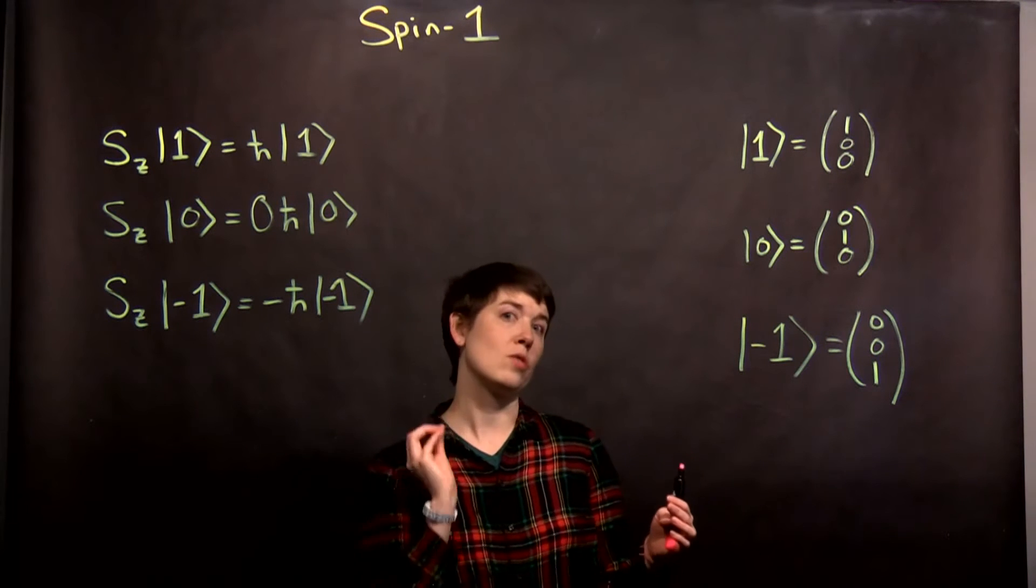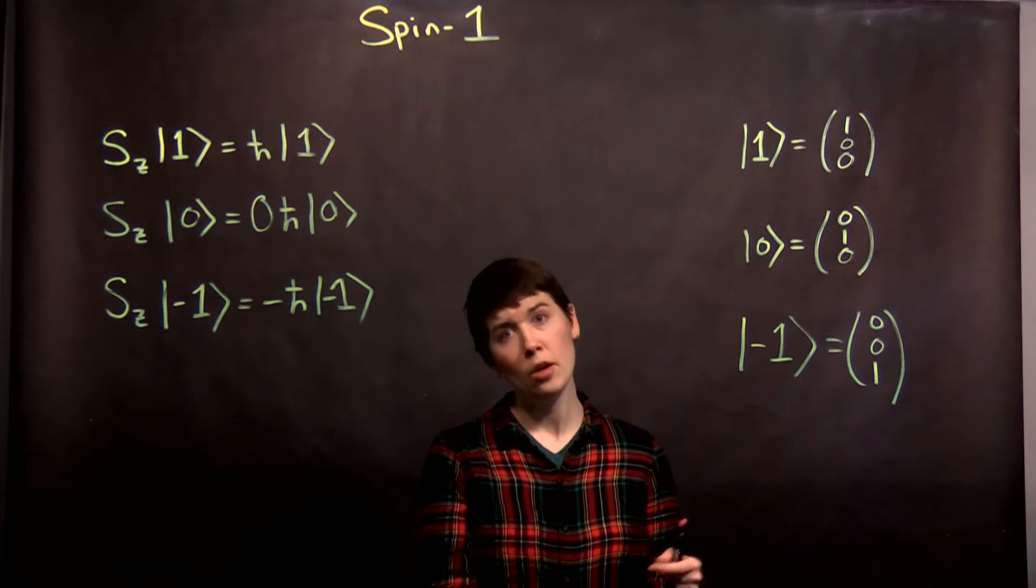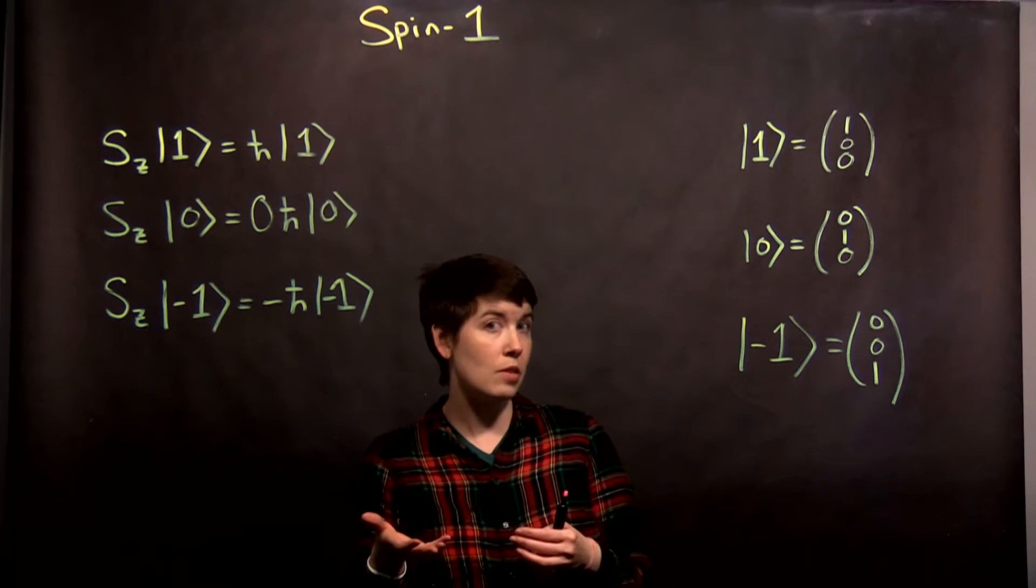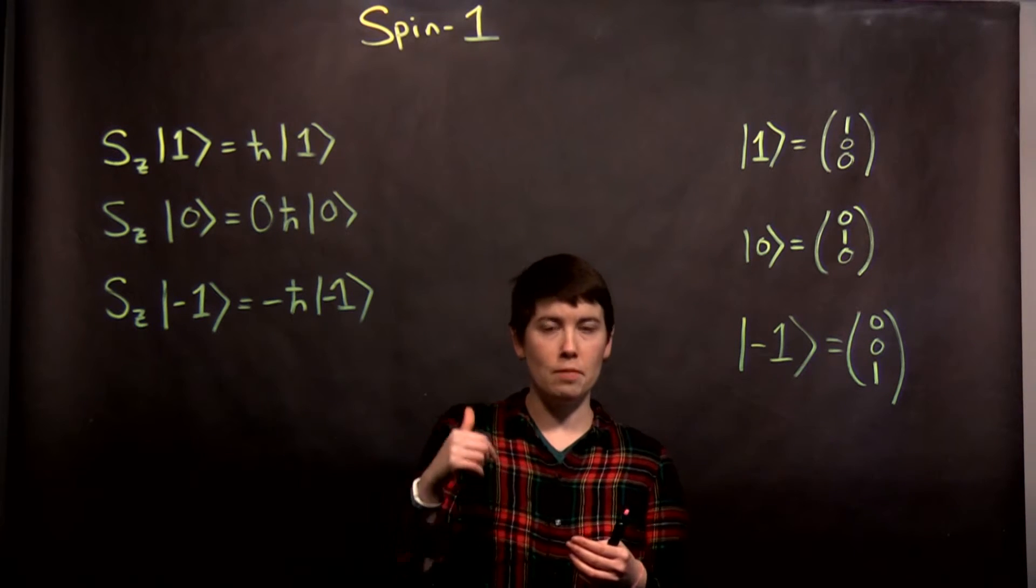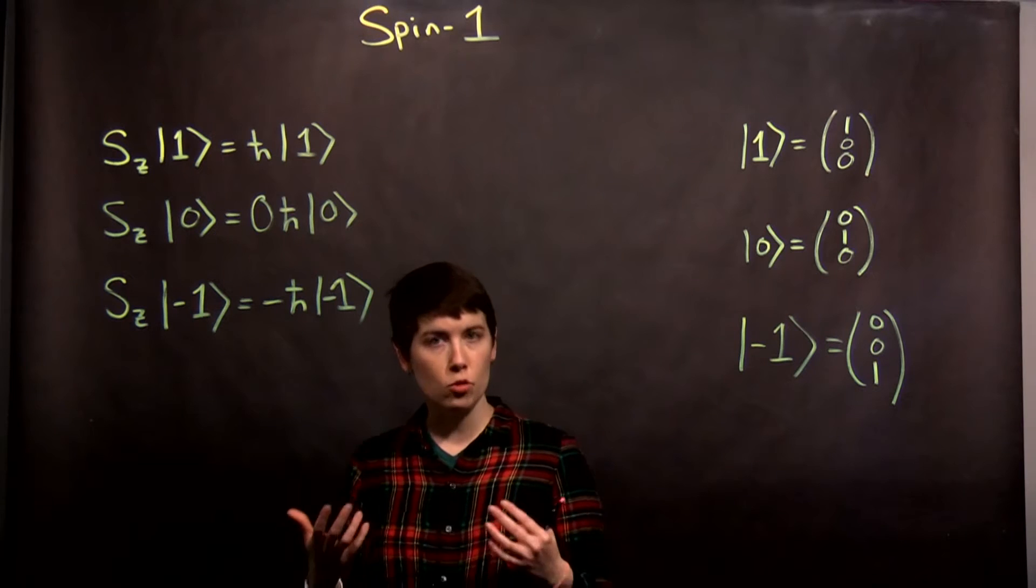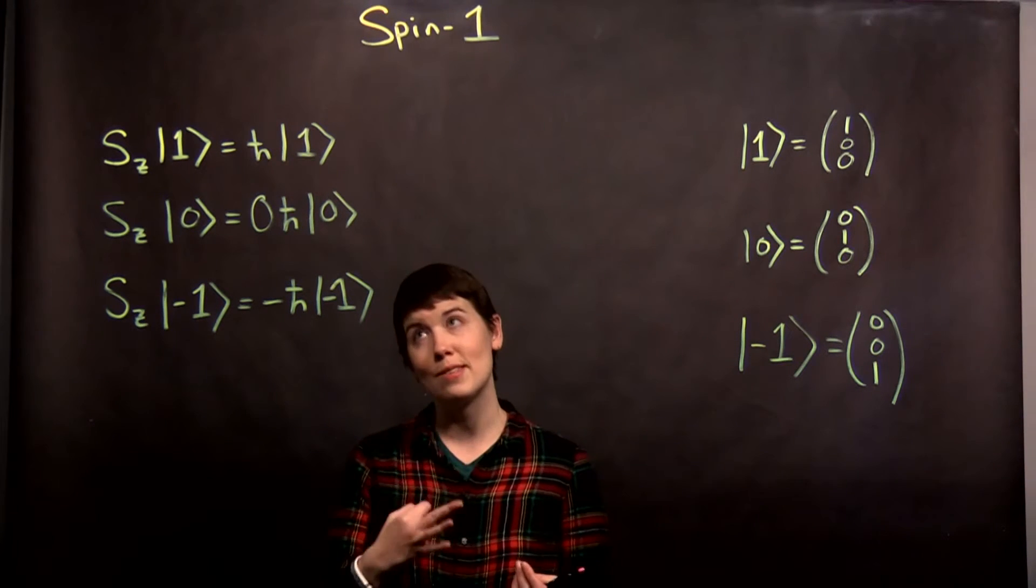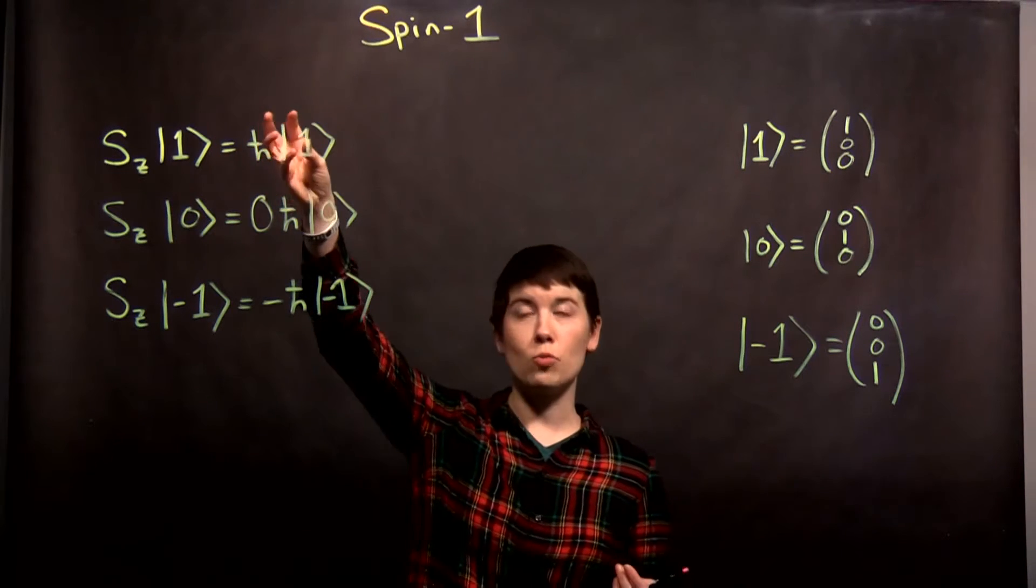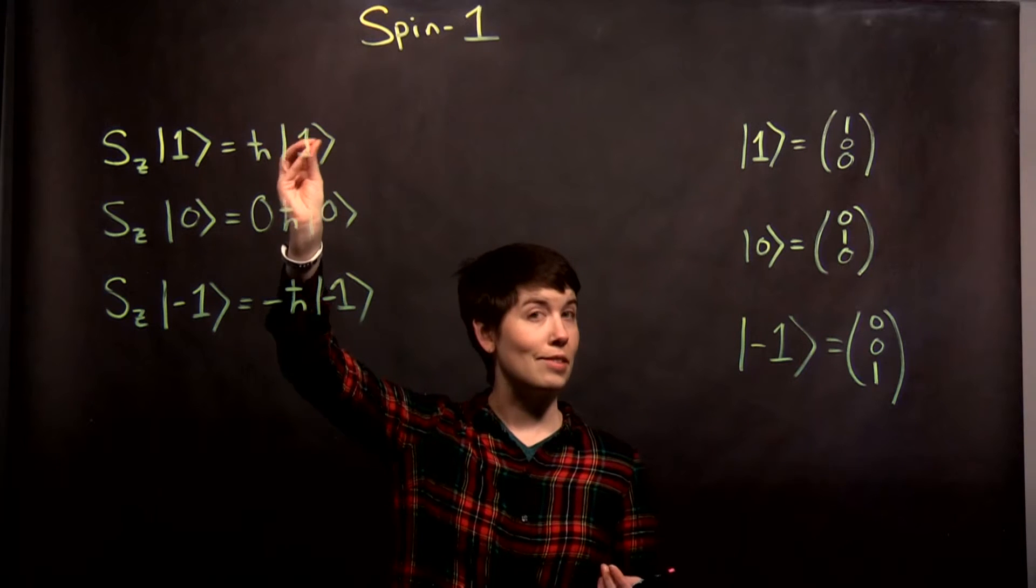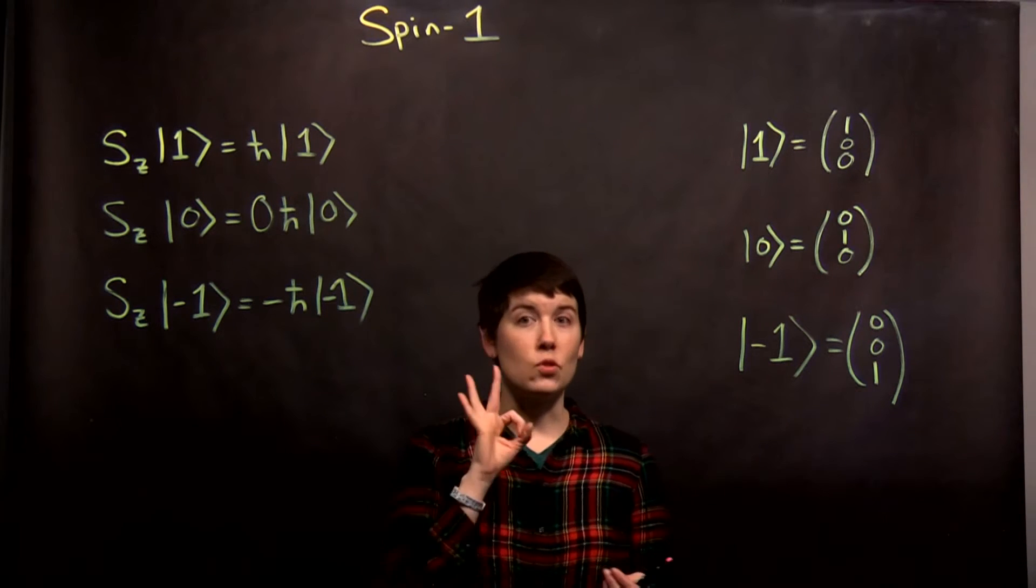But right now let's focus on understanding spin one. Now, so we have to label our states differently. For the spin one-half, there were two options. We could say up and down. Up meant plus h-bar over two. And down meant minus h-bar over two. Now if we do an experimental measurement, we can figure out what the spin is. And we in fact see that there are going to be three states. And so one of them, the measurement that we get is positive h-bar. Another measurement we get is zero. And another measurement we get is negative h-bar. So this has three states.